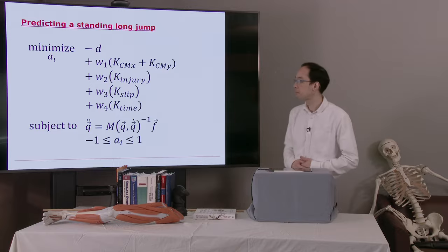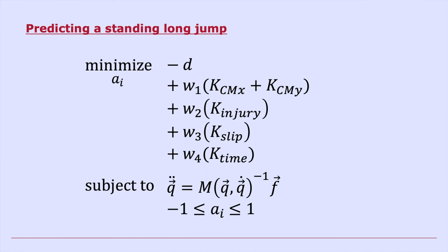The constraints in his problem, he has, these are Newton's laws, f equals ma. So he has Newton's second law. And he also has bounds on the activations of these motors that represent the muscles.